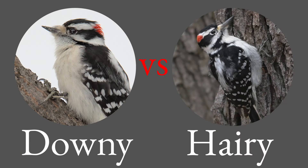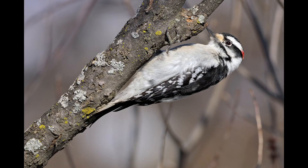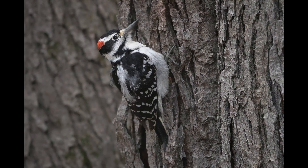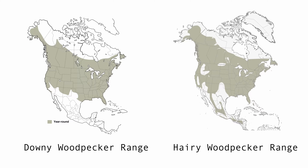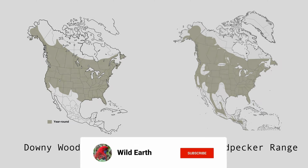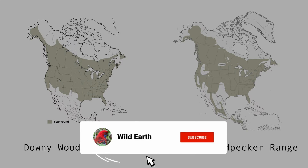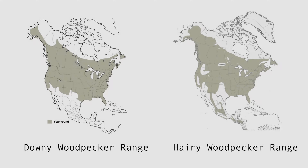Can you tell the difference between the downy woodpecker and the hairy woodpecker? These two woodpeckers are common in most of North America, and their ranges overlap significantly. Moreover, no other woodpecker has plumage so similar as these two, so they're actually a little bit tricky to tell apart.